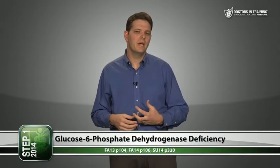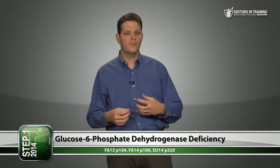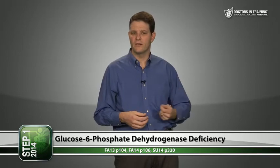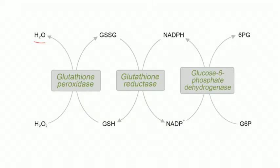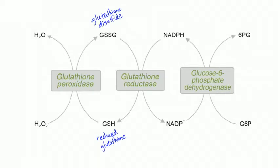NADPH is also used by red blood cells to neutralize reactive oxygen species. A red blood cell converts hydrogen peroxide into water using glutathione peroxidase — this enzyme lets hydrogen peroxide react with reduced glutathione (GSH), an important antioxidant like vitamins C, E, and A. Once oxidized, glutathione becomes glutathione disulfide (GSSG), which must be converted back to GSH by glutathione reductase using NADPH as an electron donor.